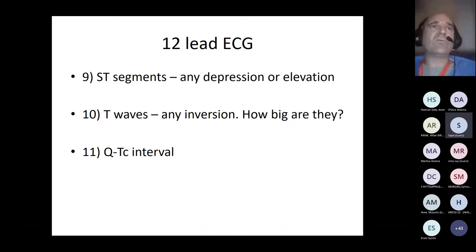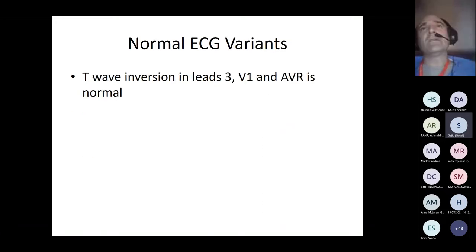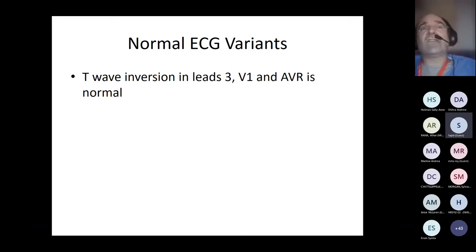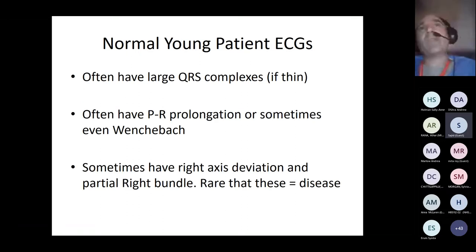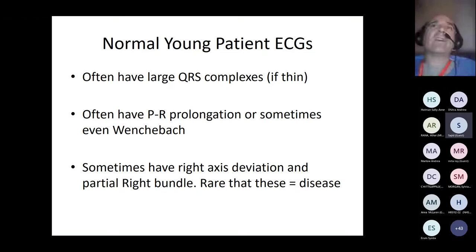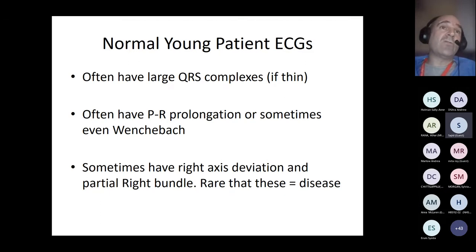Normal variants to be aware of: T-wave inversion is normal in lead III, V1, and AVR. As a registrar I frequently got calls from A&E about T-wave inversion in lead III, which is just a normal variant. Young patients often have large QRS complexes, particularly if they're thin. Young people often have first degree AV block or even Wenckebach — they have high vagal tone, which is just normal, particularly in fit young people. You may see right axis deviation and partial right bundle, which is usually just a normal variant.